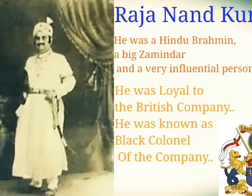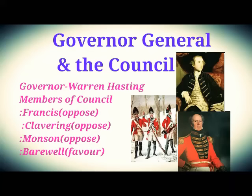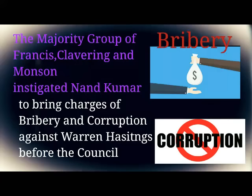The other party in this case was the Governor General of India at that time — Warren Hastings. He was our Governor General and with him there was a council of 4 members: Francis, Clavering, Monson, and Barwell. The first three — Francis, Clavering, and Monson — were always against the Governor General. But Barwell always supported the Governor General in every issue and every case.